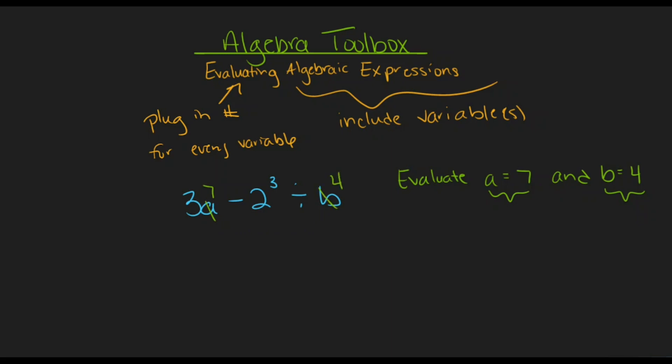Now one thing that I have to be very careful of is making sure that I don't change any of the operations when I plug in the numbers for the variables. So for example, with this 3a, I have to keep in mind that a number or a coefficient and a variable squished right next to each other like we see with 3a is a way of representing multiplication between the number or the coefficient and the variable. When I change the a to the numerical representation of 7,